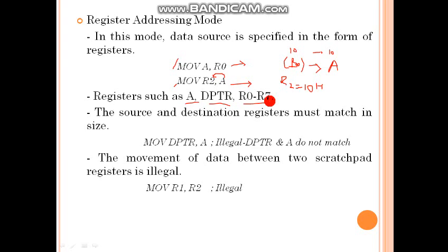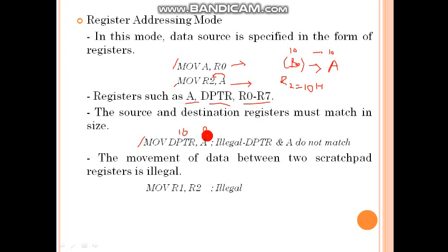Now, an important rule: in register addressing mode, the source and destination registers must match in size. For example, the instruction MOV DPTR, A — DPTR ki size 16-bit hai aur A ki size 8-bit hai. Since the sizes do not match, this instruction is illegal.